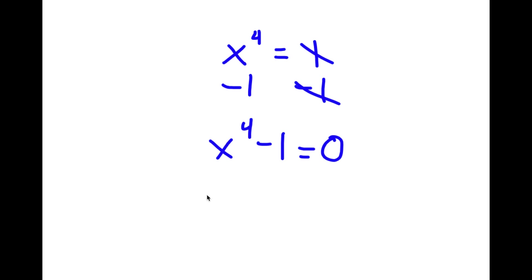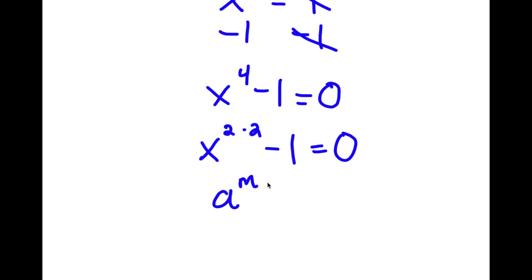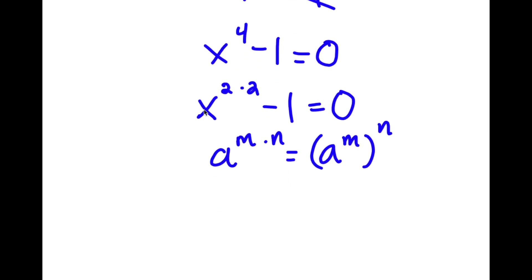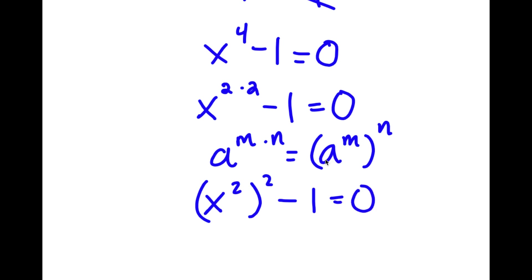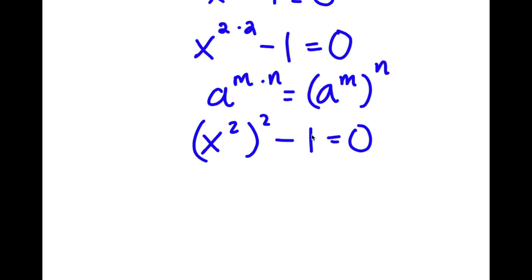Now, x to the power of 4 — I can rewrite this as x to the power of 2 times 2. If I have something in the form a to the power of m times n, this equals a to the power of m to the power of n. So x to the power of 2 times 2 becomes x squared to the power of 2. And since 1 is the same as 1 squared, I have x squared to the power of 2 minus 1 squared is equal to 0.